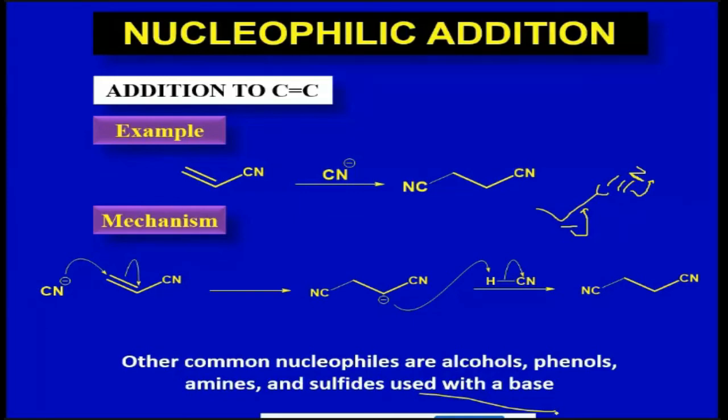What would be the role of the base here? If you have, for example, an alcohol, the role of the base would be to extract this proton from the alcohol first and convert it into an anion like this. Now we have a negative charge on oxygen, and now this is a stronger nucleophile.